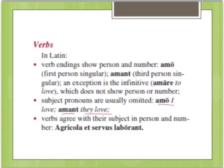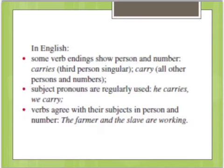In Latin, verbs agree with their subject in person and number. So, for example, 'servus' is third singular, and if you also have another 'servus,' that's third singular plus third singular — two singulars make a plural — and so then you'd have a verb that's also third plural. In English, some verbs show person and number, but not all. Subject pronouns are regularly used, like 'he,' 'she,' 'it,' or 'we,' whereas in Latin they're often omitted. The verbs still agree with their subject in person and number, which is why your English teacher might write 'subject-verb agreement' on your paper — meaning you have a plural verb with a singular subject, or vice versa.